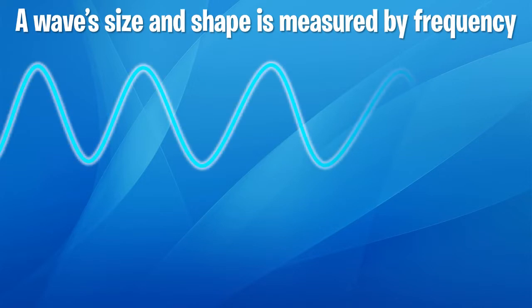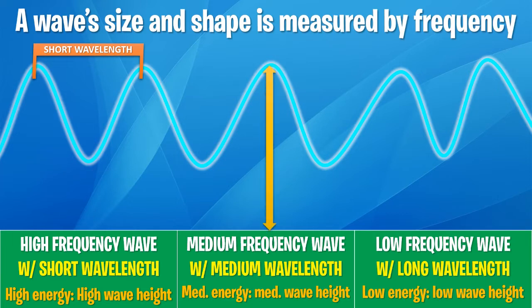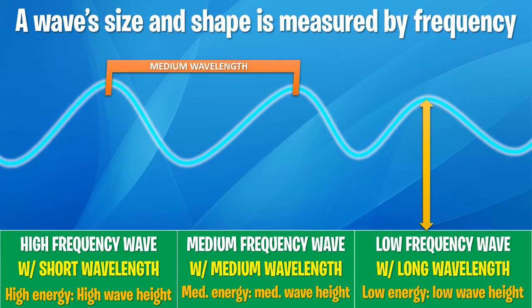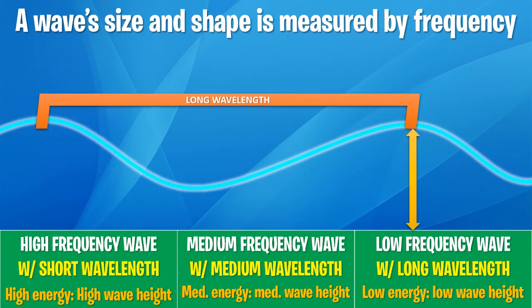Wave size and shape is measured by frequency, and this has its own features. Starting with the high frequency wave, we can see it has a very short wavelength and high energy, which means it will have a high wave height. Moving to medium frequency, the wavelength is medium and the wave height is medium — medium energy in the water. At low frequency we find a low wavelength and low energy, so it's a low wave height.